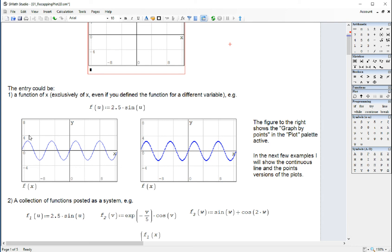It will give you a continuous line, which you can then transform using the Plot panel here into a graph by points or back to a continuous line. As I show you here, this is the continuous line, this is the points.